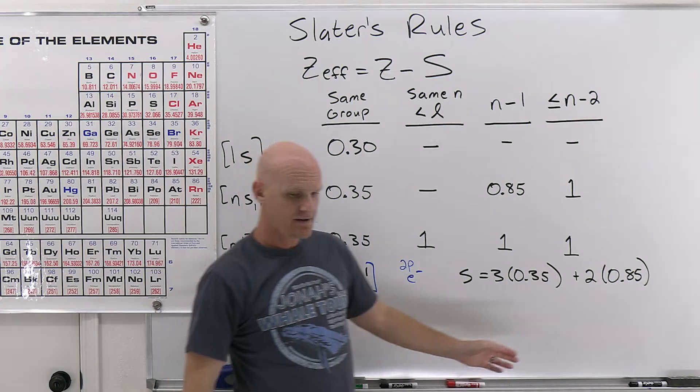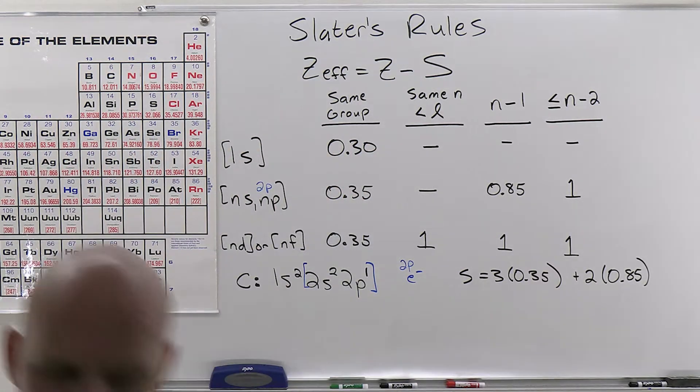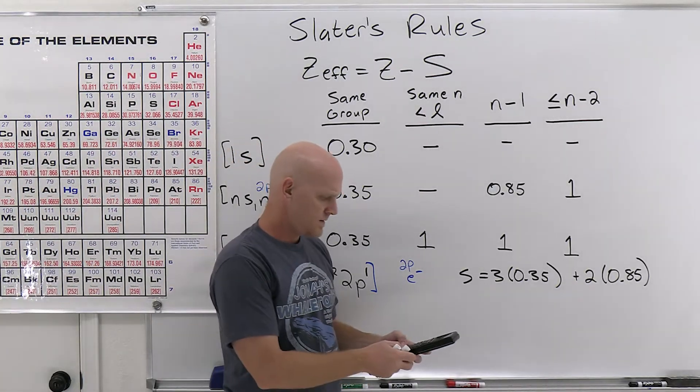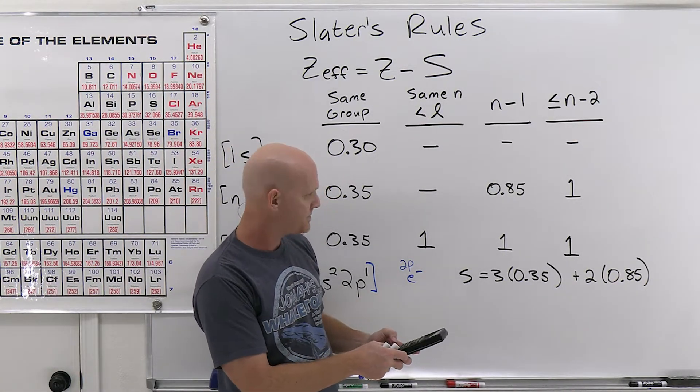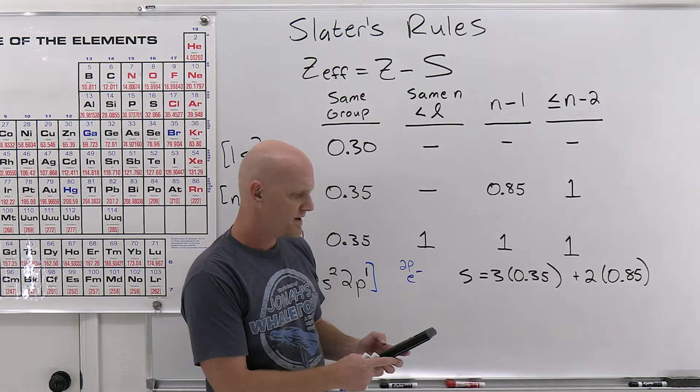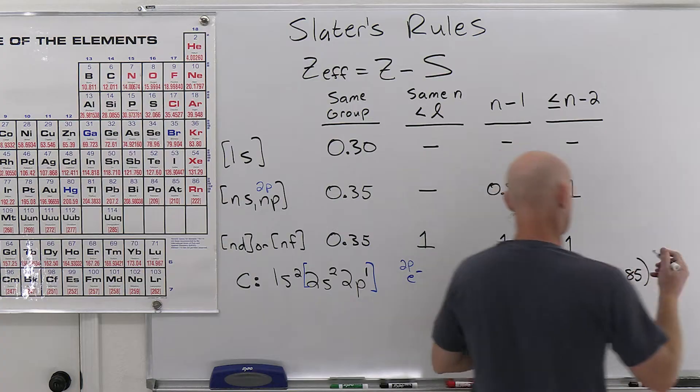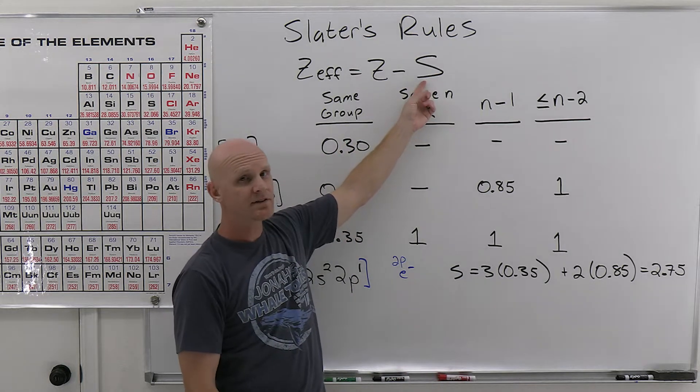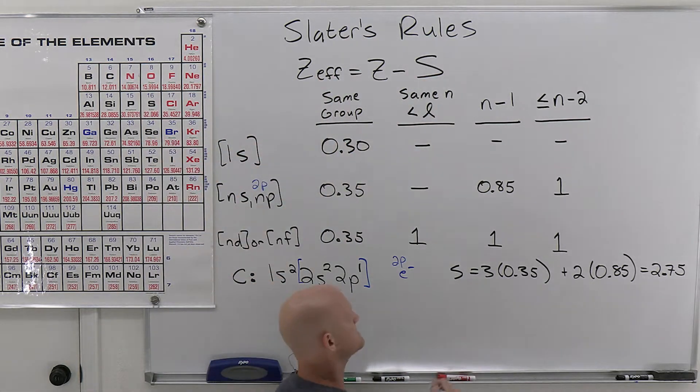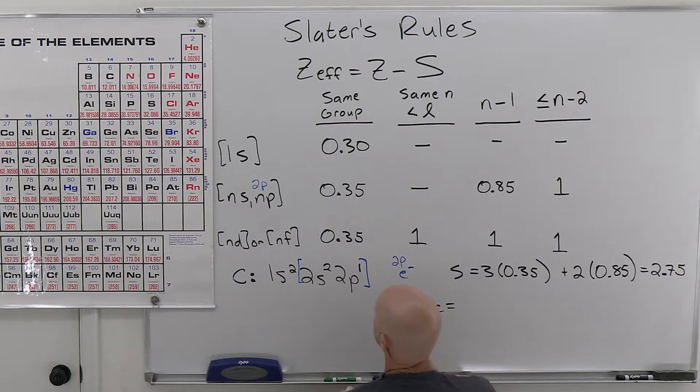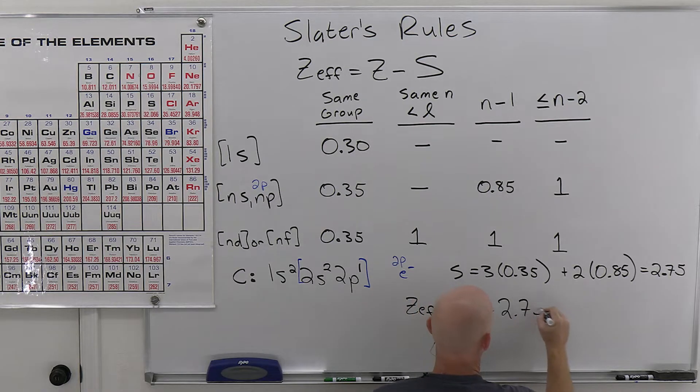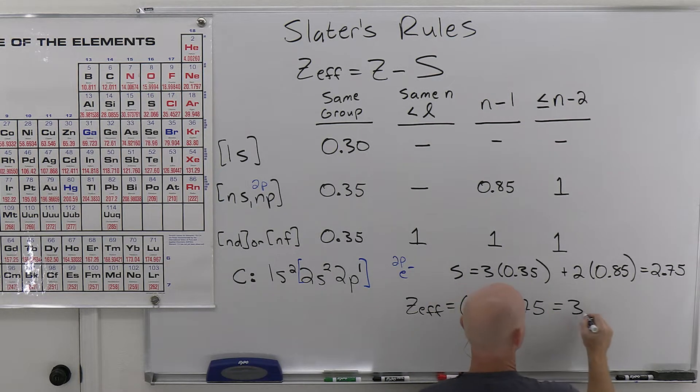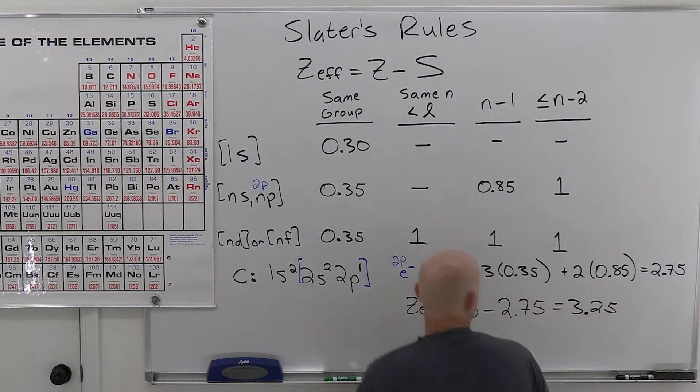Cool. So now from here, we're going to add this up. And in this case, why don't we just go calculator on this. We've got 3 times 0.35 plus 2 times 0.85, and we're going to get 2.75. So again, that's our screening constant. When we're calculating effective nuclear charge now, a better approximation than we would have gotten without Slater's rules here. And so our effective nuclear charge then is going to equal Z. And for carbon atomic number 6 minus our new screening value of 2.75, and here we're going to find out we're going to get 3.25.